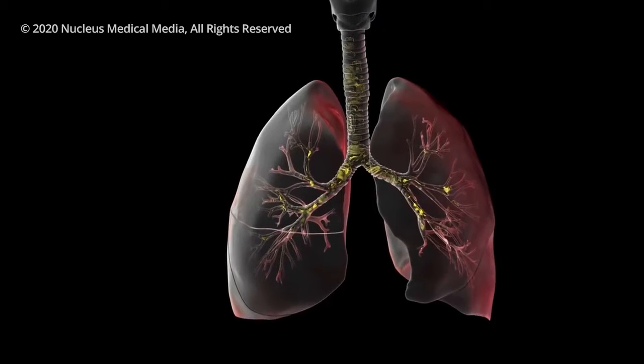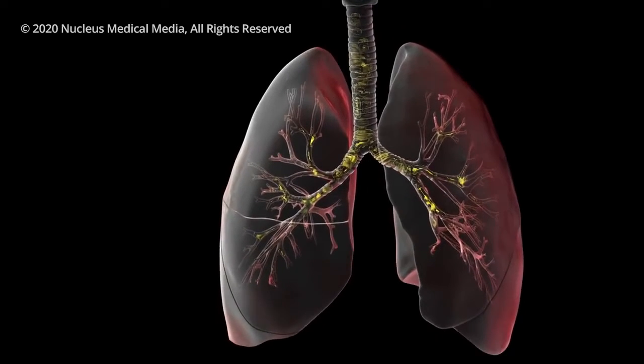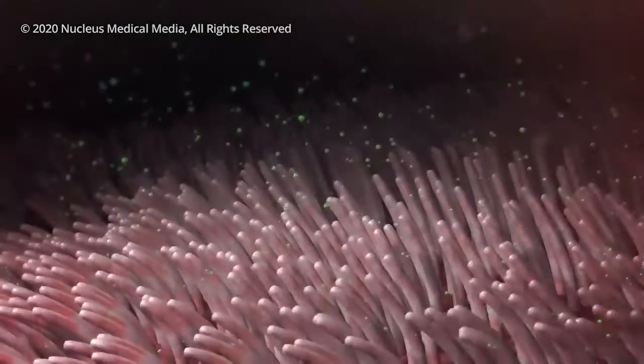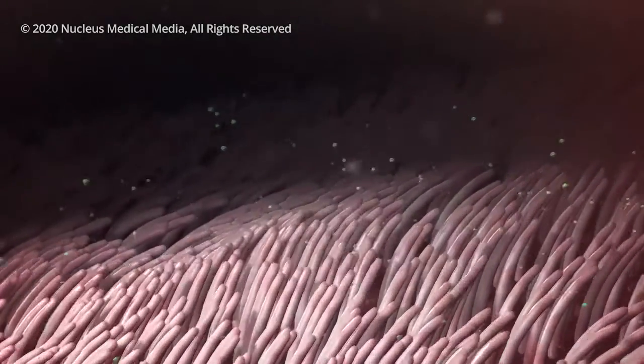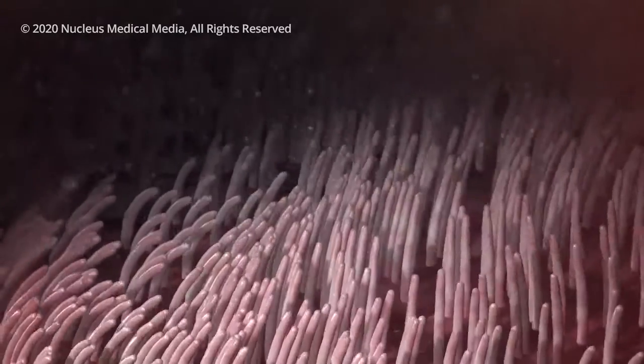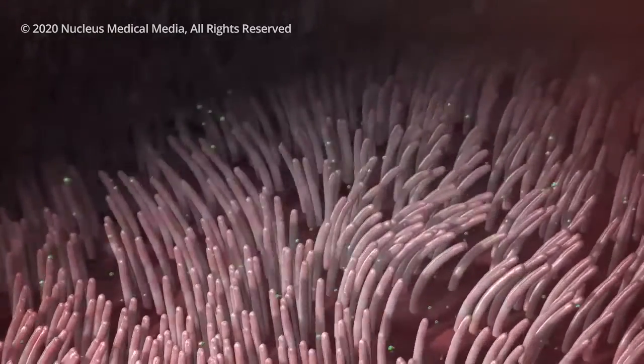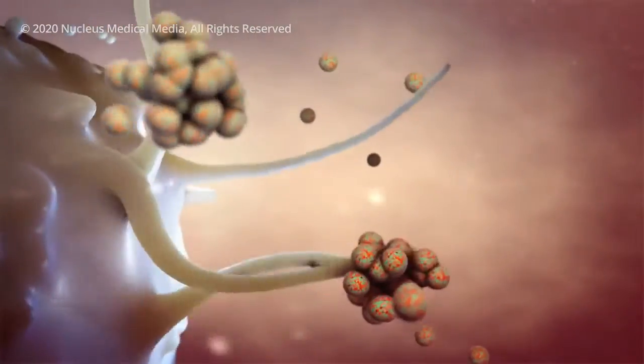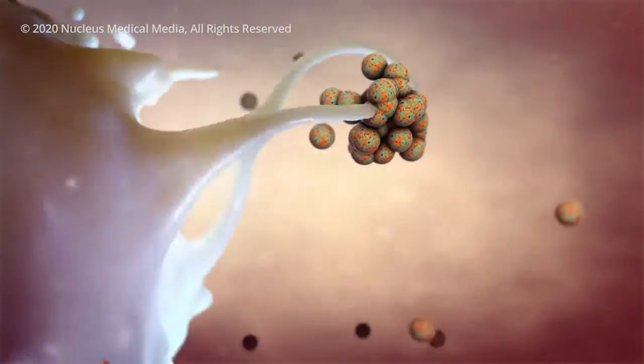Your airways catch most germs in the mucus that lines your trachea, bronchi, and bronchioles. In a healthy body, hair-like cilia lining the tubes constantly push the mucus and germs out of your airways, where you might expel them by coughing. Normally, cells of your immune system attack viruses and germs that make it past your mucus and cilia and enter your alveoli.